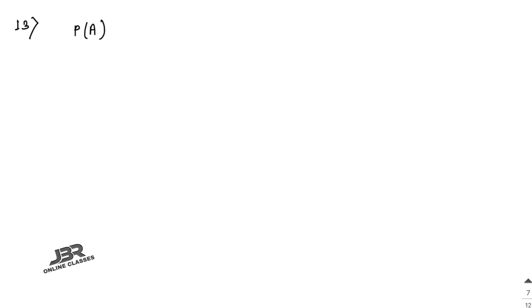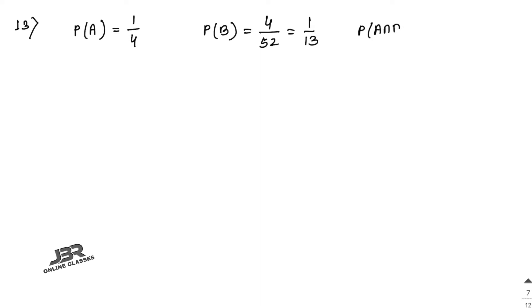Sum number 13: A card is drawn from a random pack of 52 playing cards. What is the probability that the card drawn is neither a spade nor a queen? Event A is drawing a spade: P(A) = 1/4. Event B is drawing a queen — there are 4 queens, so P(B) = 4/52 = 1/13. There is only one queen of spades, so P(A intersection B) = 1/52.